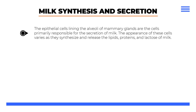The epithelial cells lining the alveoli of mammary glands are the cells primarily responsible for the secretion of milk. The appearance of these cells varies as they synthesize and release lipids, proteins, and lactose of milk.